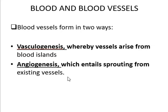These blood vessels will be developed in two ways, called vasculogenesis and angiogenesis. So there are two ways by which blood and blood vessels can develop. Vasculogenesis means vessels arise from blood islands in the mesoderm. Angiogenesis entails sprouting from the existing vessels.